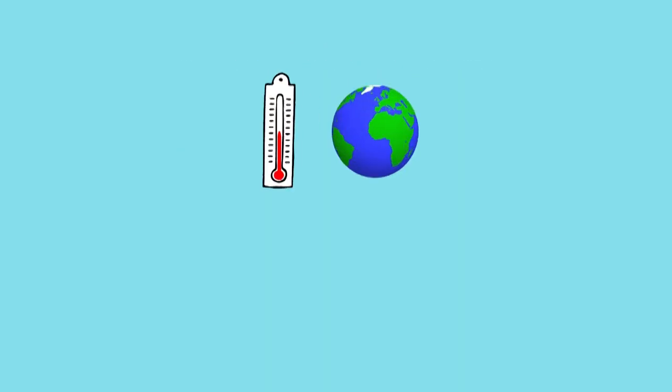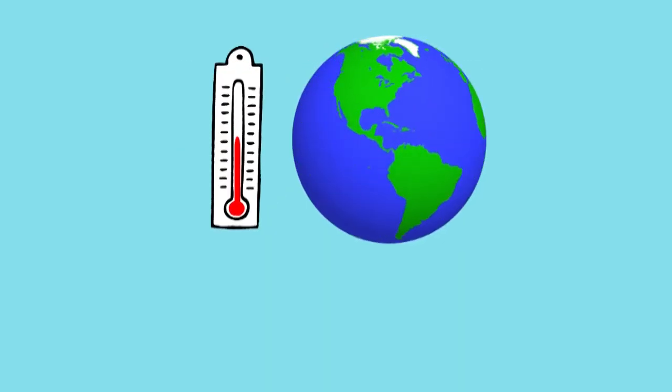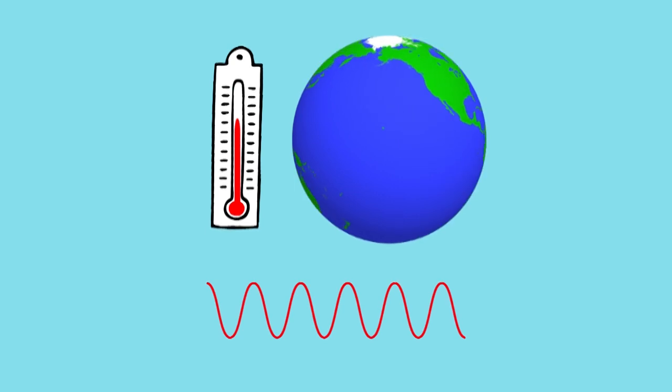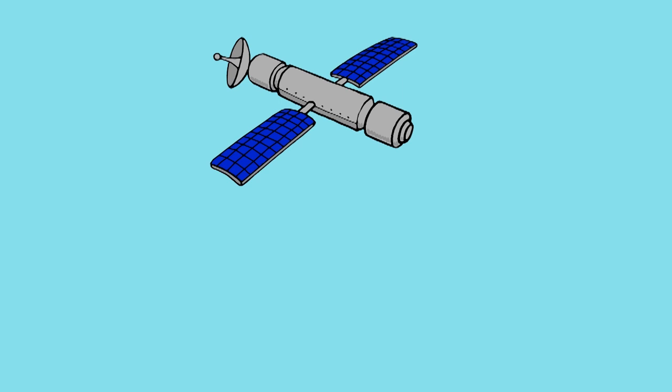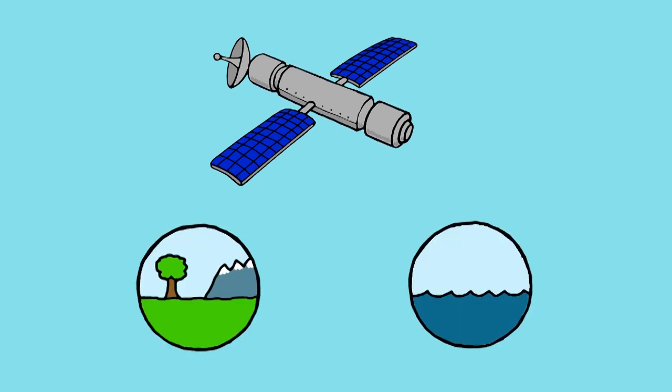Global temperatures are difficult to monitor because they are changing all the time, but we can take an average, and now that we have satellites we can measure surface temperature of both land and ocean very accurately.